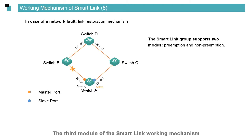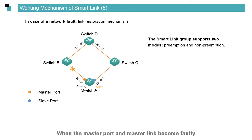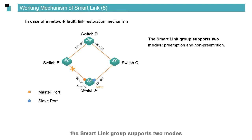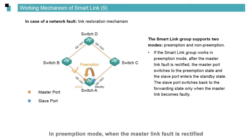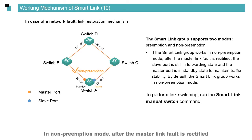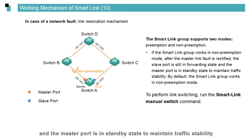The third module of the smart link working mechanism is the link restoration mechanism. When the master port and master link become faulty, the slave port is switched to the active state and the master port is switched to the standby state. In non-preemption mode, after the master link fault is rectified, the slave port remains in forwarding state and the master port remains in standby state to maintain traffic stability.